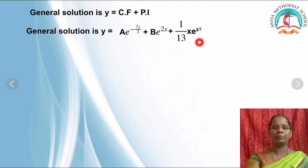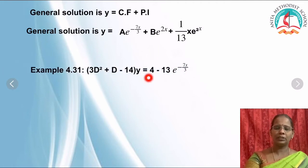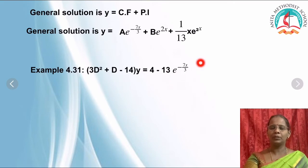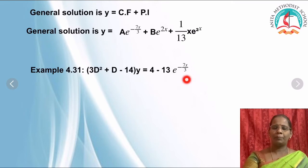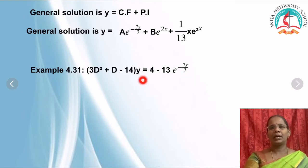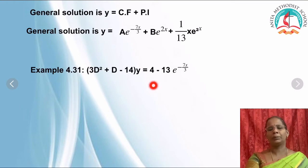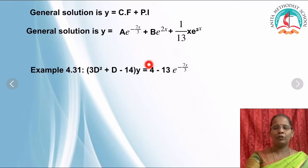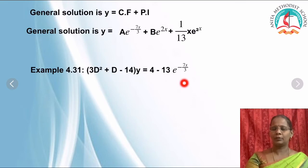This is how you find the particular integral. Take the homework problem: in that example, instead of 2 it is -7/3x, which is also one of the roots, so φ(D) = 0 when x = -7/3. You have two terms, so find PI₁ and PI₂ separately. Where there is no exponential, write it as e^(0x). Find the PI for 4 and for -13·e^(-7/3·x) separately.